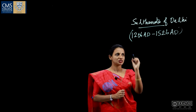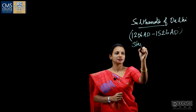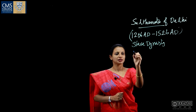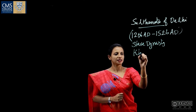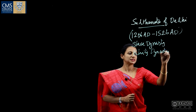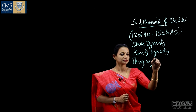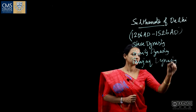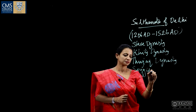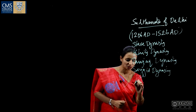There were 5 dynasties during this period. The first one is the Slave Dynasty, the second one is the Kilji Dynasty, the third is the Tughlaq Dynasty, the fourth is the Sayyid Dynasty, and the last one is the Lodhi Dynasty.